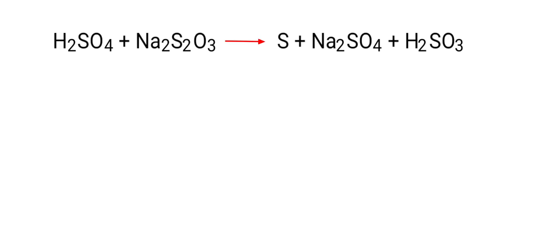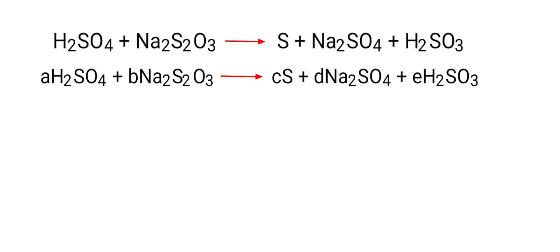First, we give each compound a letter coefficient: A H2SO4 plus B Na2S2O3 gives us C S plus D Na2SO4 plus E H2SO3. Next, apply the conservation of mass - the total number of atoms of each element must be the same on both sides.